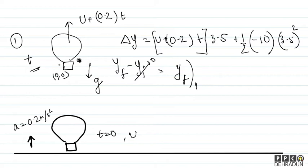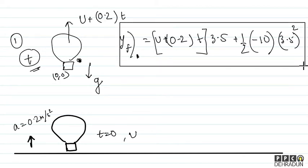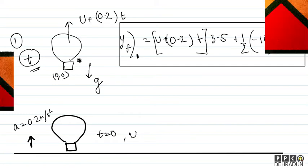इस समय time = T था, और हम T से 3.5 seconds बाद की बात कर रहे हैं। तो y_final of stone 1, 3.5 seconds बाद निकल गया — यह उसका coordinate है। अब इसके further 2 seconds बाद एक और पत्थर drop किया गया।